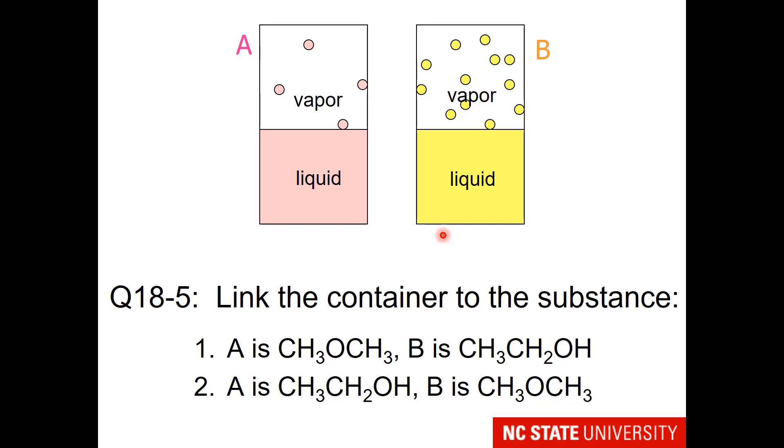This last question is going to take you back to some compounds that we have worked with before. We want to link the container to the substance. So maybe you remember an earlier question where you evaluated dimethyl ether and ethanol to determine which one had the higher boiling point, which means you should know their relative intermolecular forces. Please allow me to remind you that molecules with a high boiling point will have strong intermolecular forces and therefore a low vapor pressure. Boiling point and vapor pressure are inversely related.